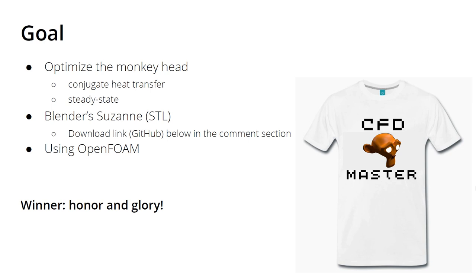So if you watched the first video, the problem I stated was to optimize the monkey head of Suzanne, who is a super monkey and has glowing eyes. The problem is that the nose is made out of chocolate and it will melt, and I asked you to optimize a cooling system into her superhero head so the nose doesn't melt.